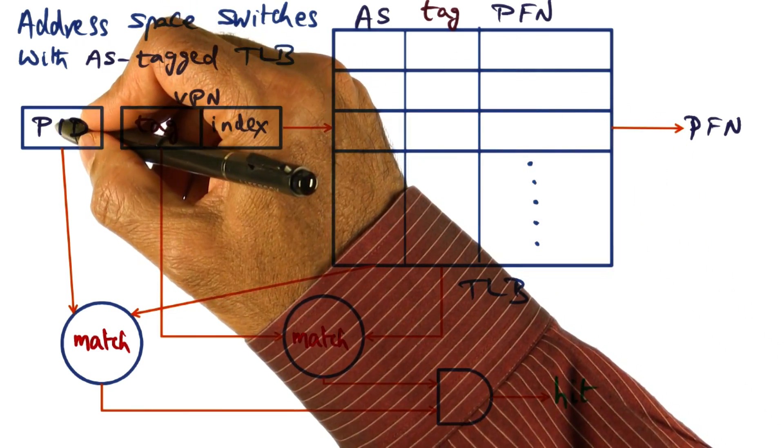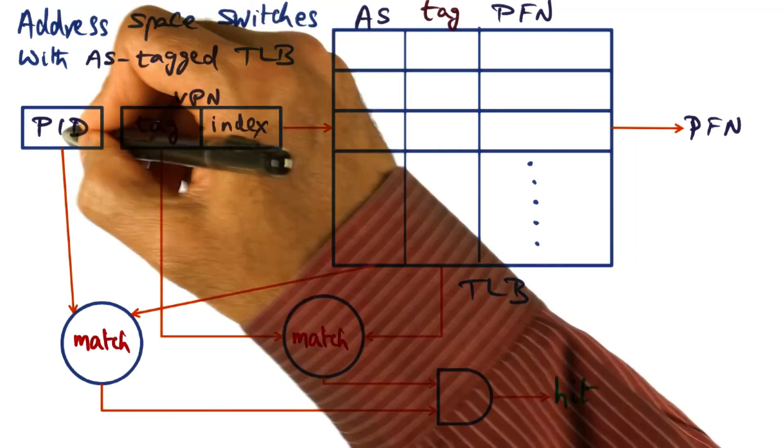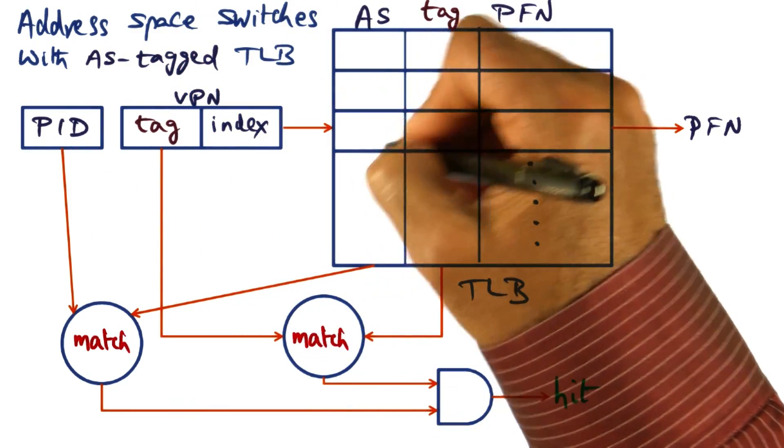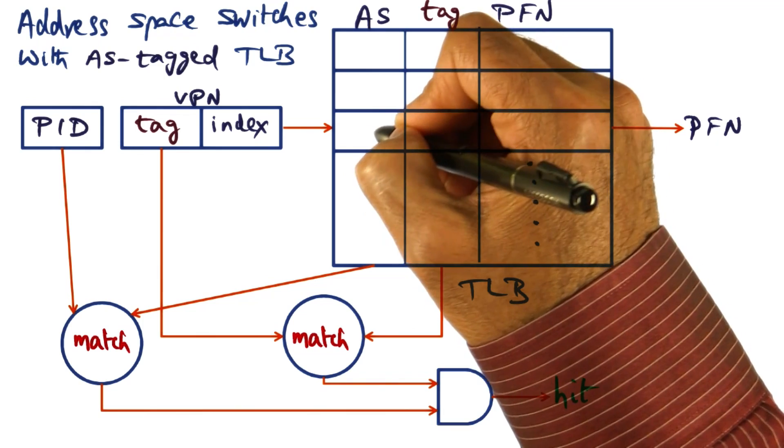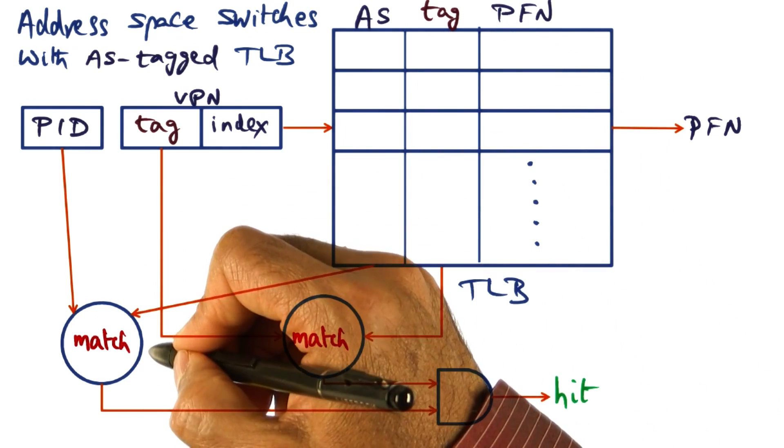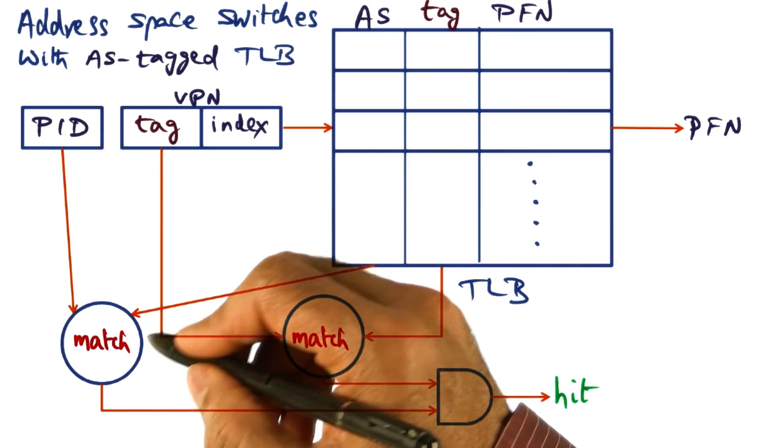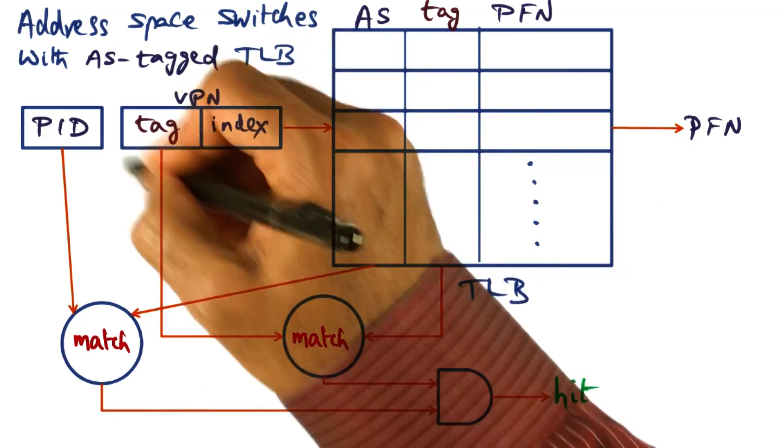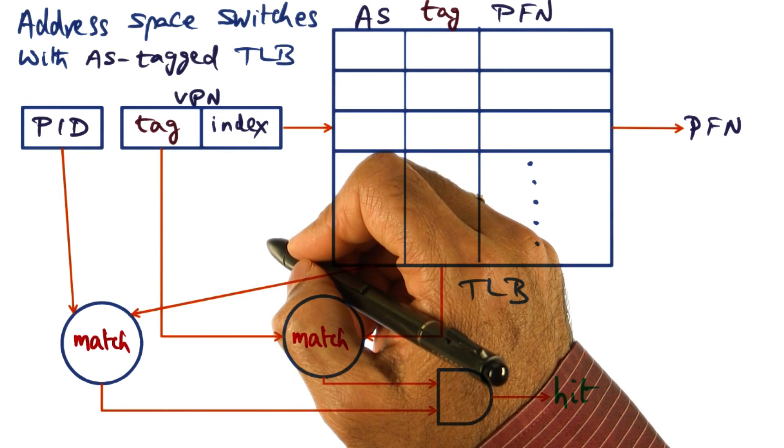We compare the PID of the process currently generating this virtual address against the tag contained at that entry. The matching hardware will say yes or no. If it says no, we are done—this entry does not correspond to the virtual address we are trying to translate.